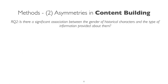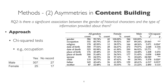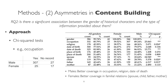For the second question about asymmetries in content building, we did chi-square tests for a list of properties. The major takeaway would be that male characters had better coverage in occupation, religion, or date of death, while the females had better coverage in familial relations like spouse, child, father, mother.